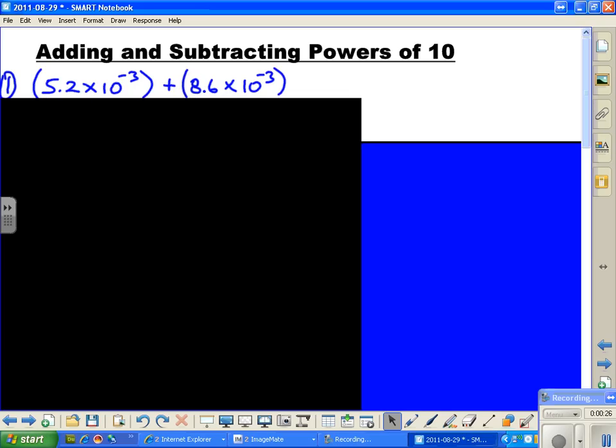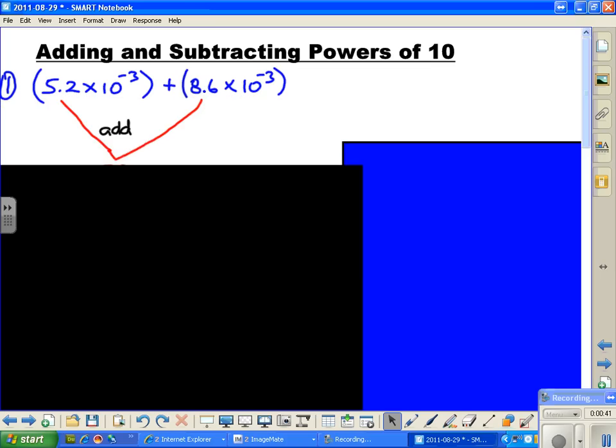Let's take a nice simple problem. We have 5.2 times 10 to the minus 3, and we're going to add 8.6 times 10 to the minus 3. This is going to work exactly the way you think it would.